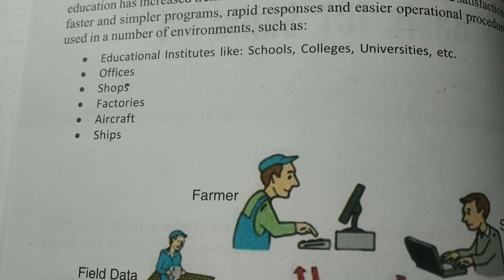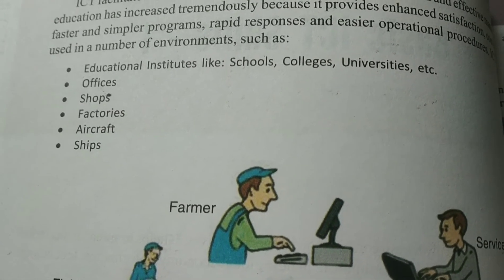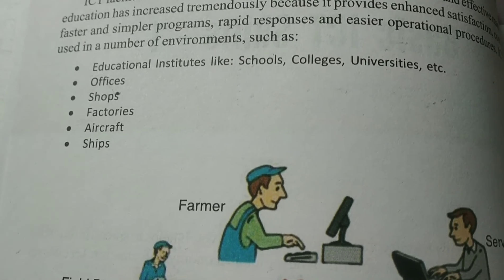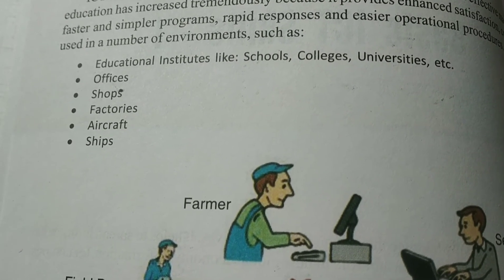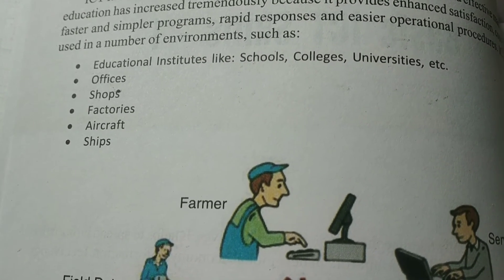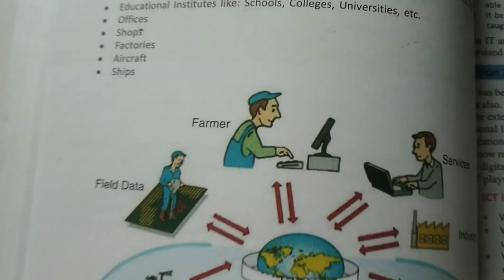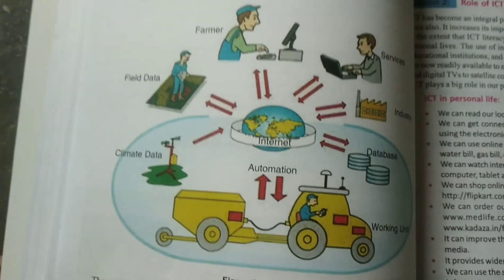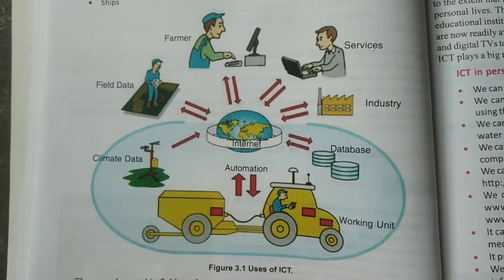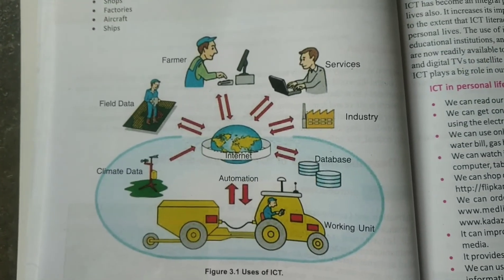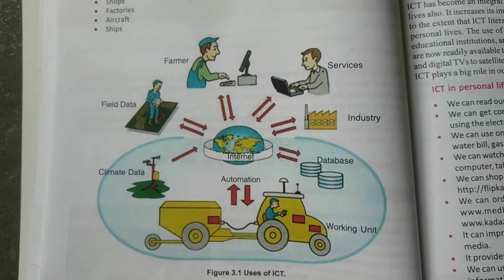Educational institutions like schools, colleges, universities, etc. Offices, shops, factories, aircrafts, ships — means everywhere it is very much important. See this structure — uses of ICT. What are the uses of ICT? A farmer — we will learn how a farmer uses ICT.